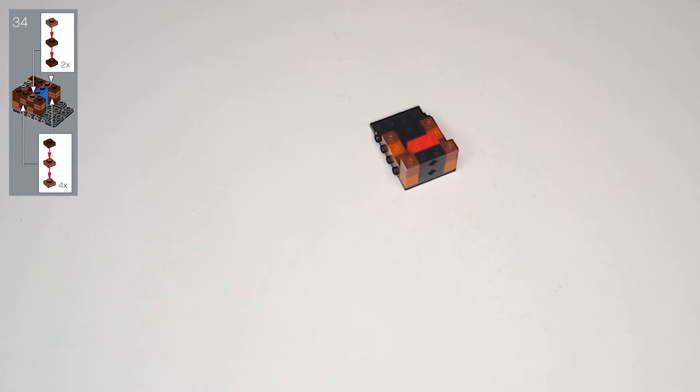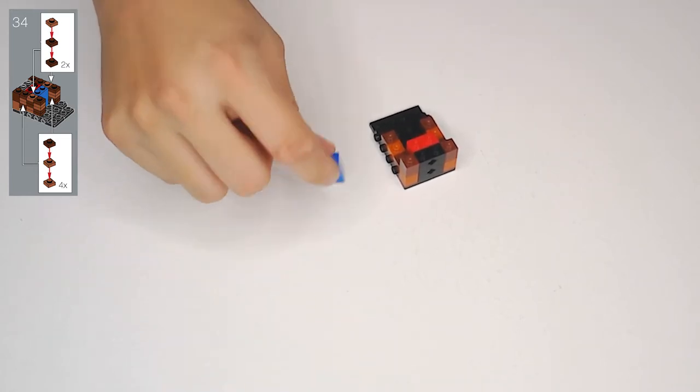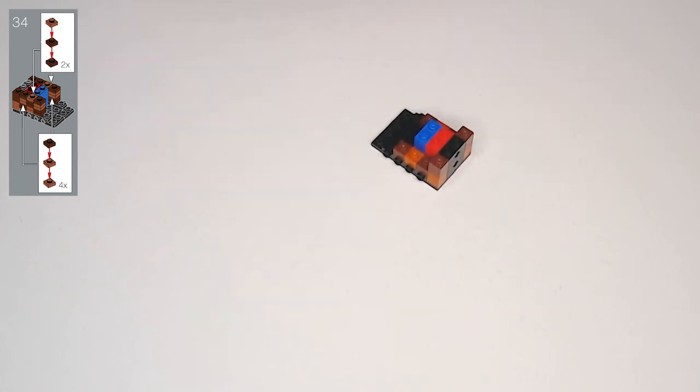Yeah, so 33. We have this blue 1x2 double high block. That's going to go behind red. Right there. And then in step 34, we need 8 1x1 plates in dark brown. And then 10 in light. We are going to be making these little blocks till the cows come home.